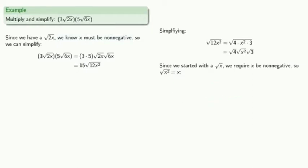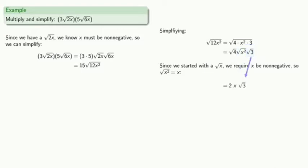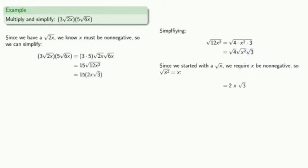So the square root of 4 is 2, the square root of x squared is just x, and the square root of 3 we're stuck with. Finally, we'll do a last bit of simplification and multiply out the coefficients.